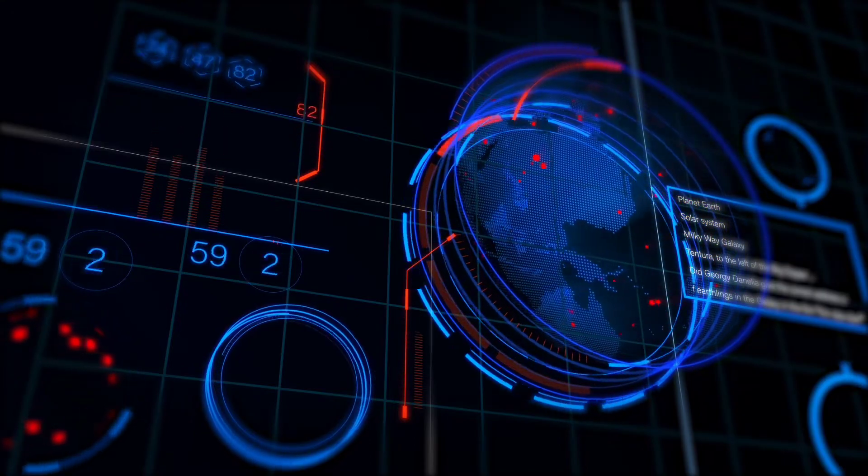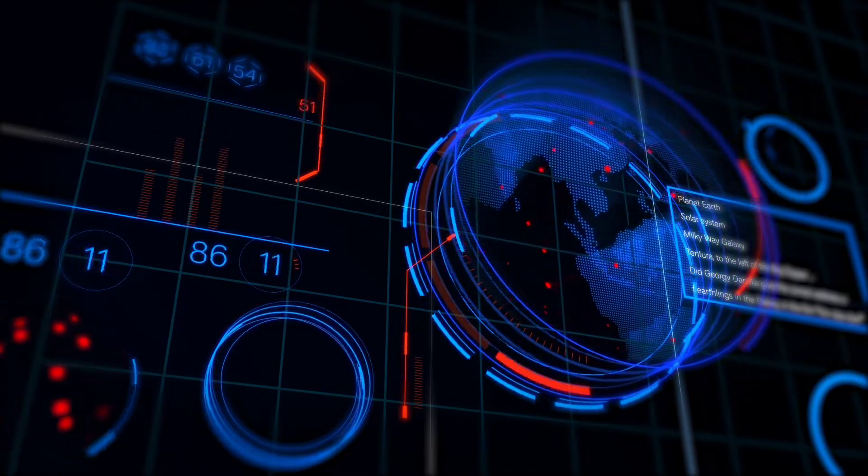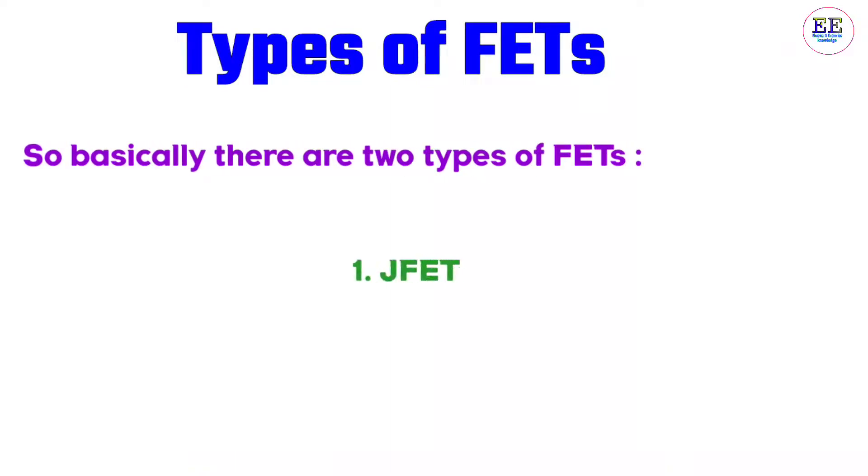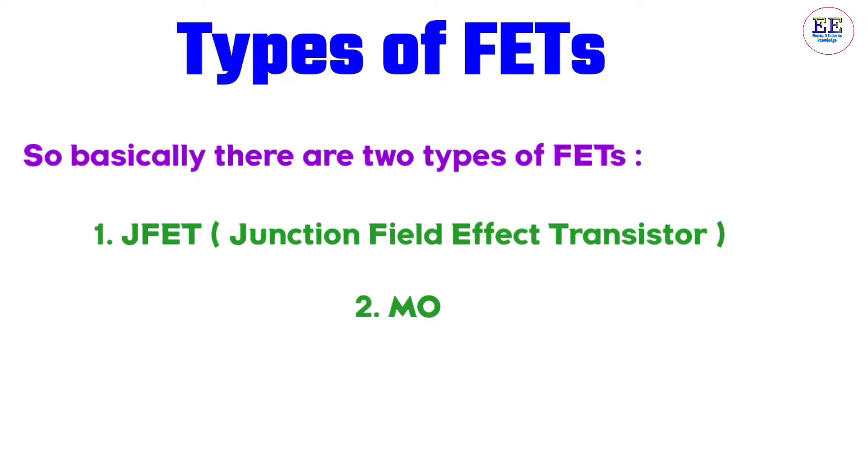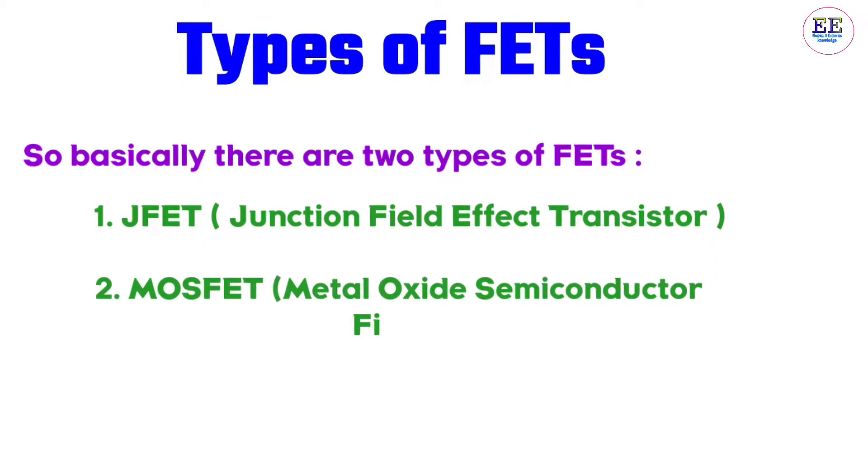There are basically two types of FETs: Number one, JFET or Junction Field Effect Transistor, and number two, MOSFET or Metal Oxide Semiconductor Field Effect Transistor, also called Insulated Gate Field Effect Transistor or IGFET.